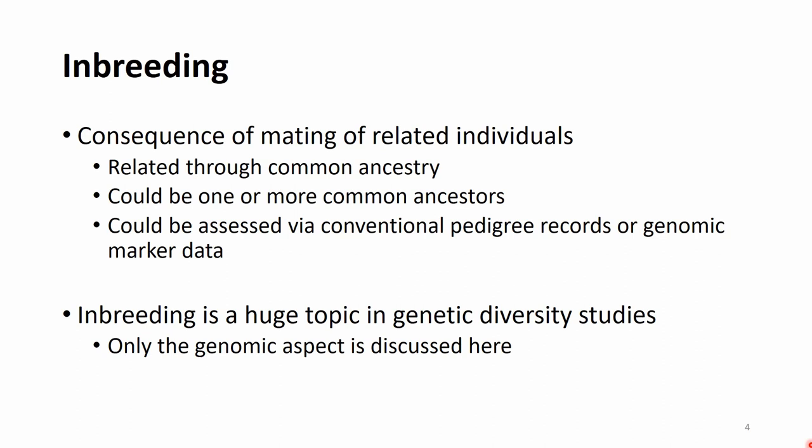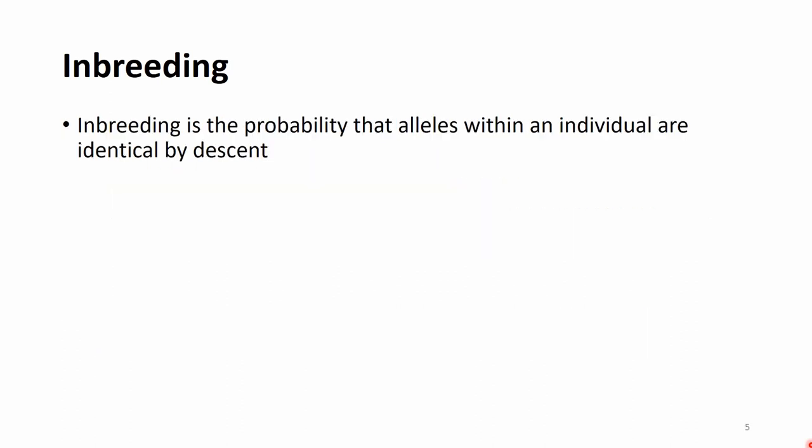Inbreeding is a huge topic, especially if you are interested in the genetics of diversity, and there is a lot of literature and various aspects that could be discussed. In this presentation we will focus only on the genomic aspect, and more precisely on the so-called runs of homozygosities. There are other methods to determine the inbreeding coefficient based on genomic data — let me know in the comments if you'd like me to revisit this topic.